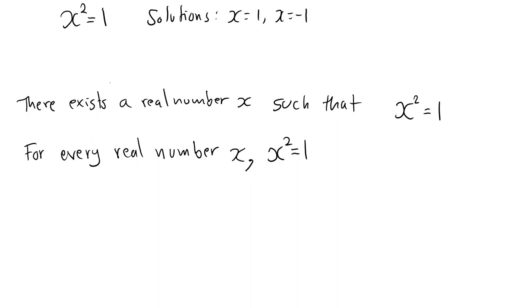The existential quantifier, there exists, is so common in mathematics that there is a universally recognized symbol to represent it, and it's the backwards capital letter E. X is a real number can also be abbreviated. Instead, we write x followed by this symbol, which means belongs to, followed by an R in blackboard bold, which means the real numbers.